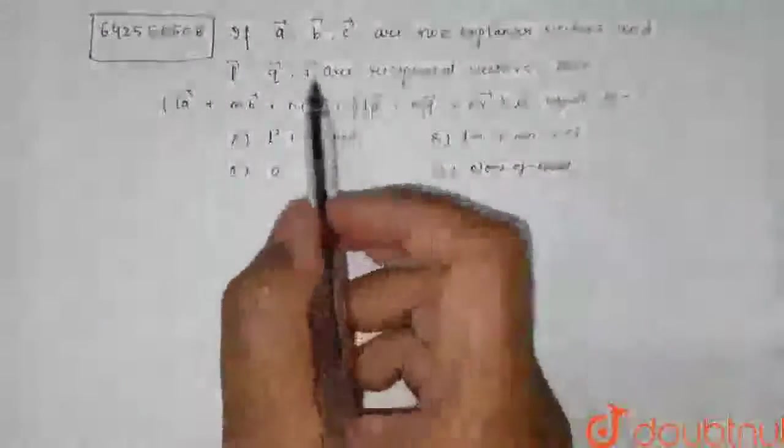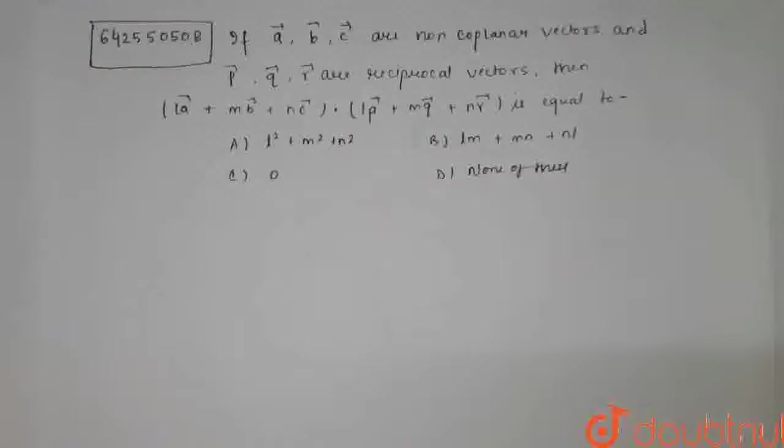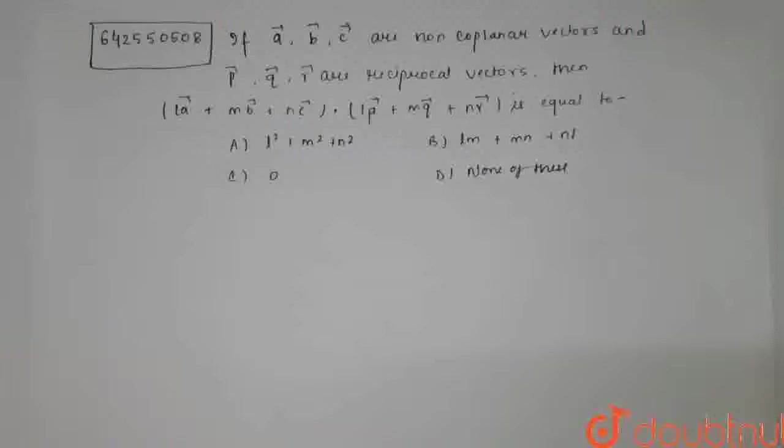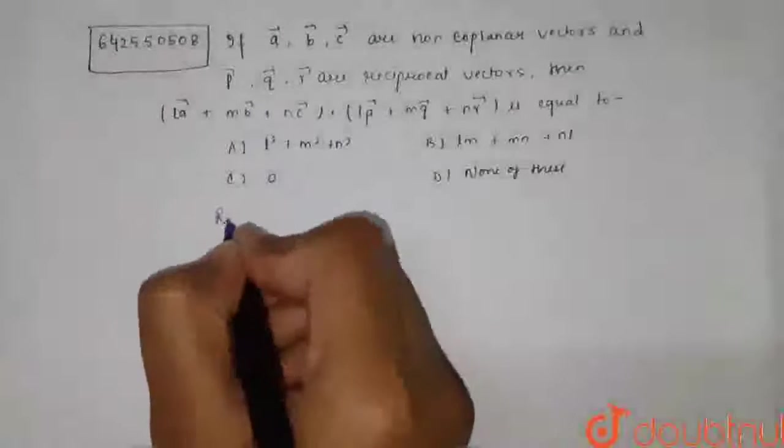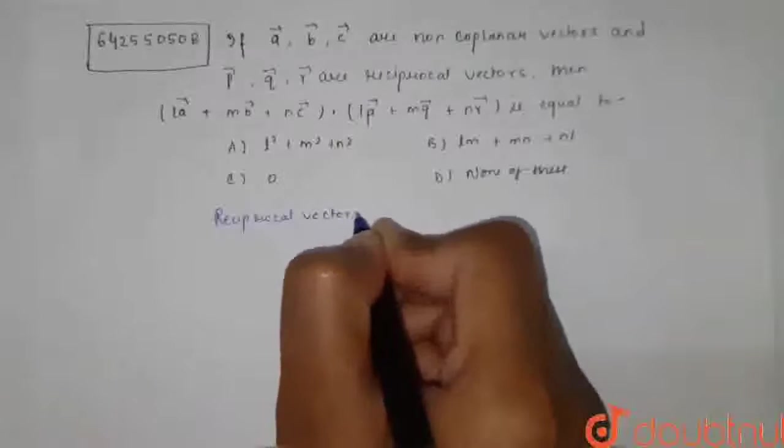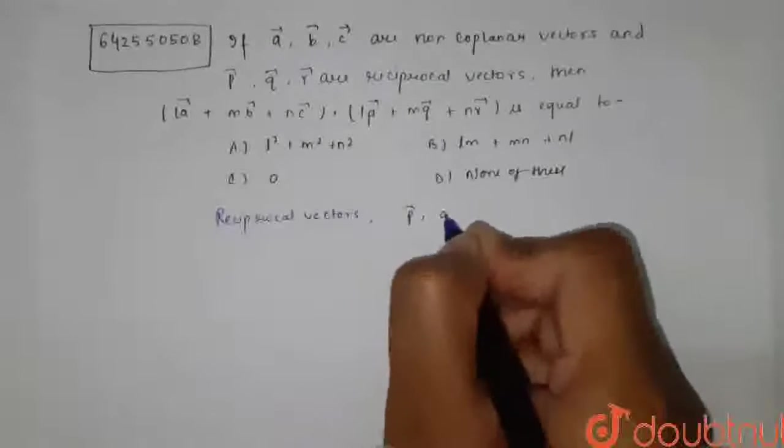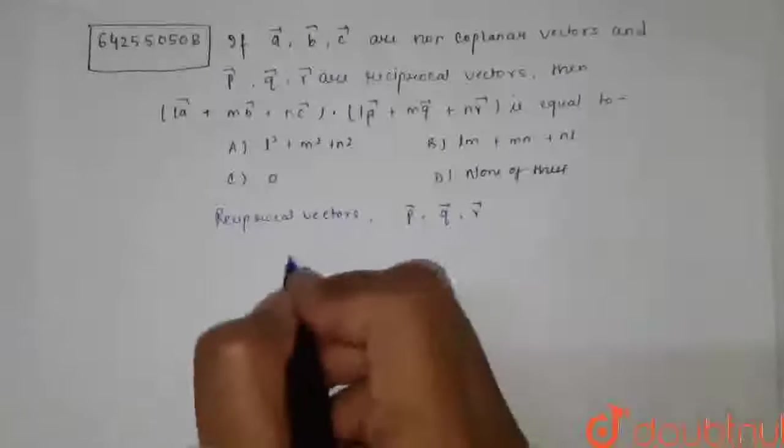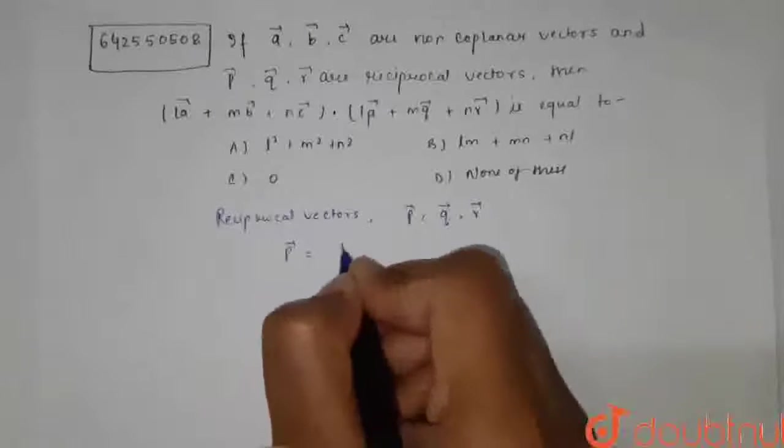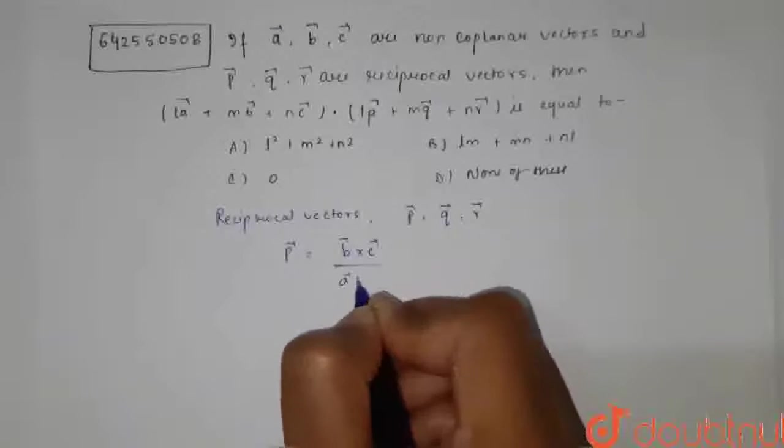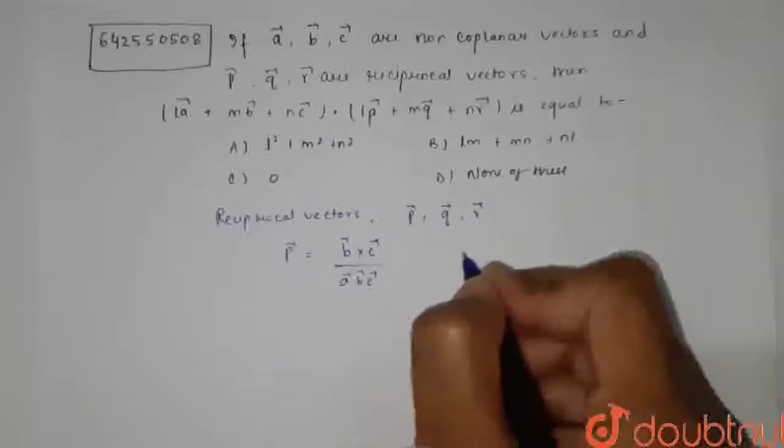And the reciprocal vectors are P, Q, R of A and B. As we all know that reciprocal vectors can be written in terms of A and B. P can be written as B cross C upon A, B, C. And similarly, Q vector can be written as C cross A upon A, B, C.